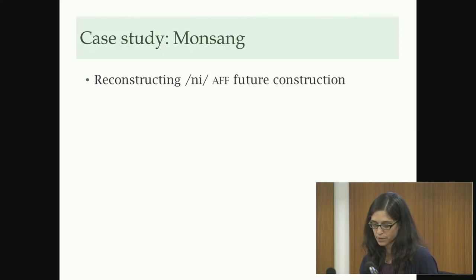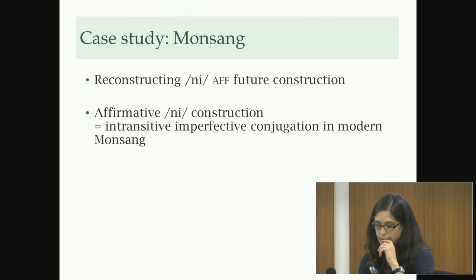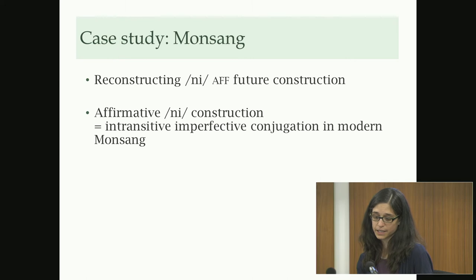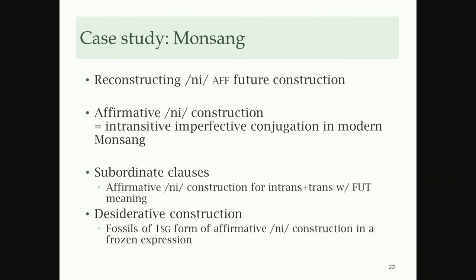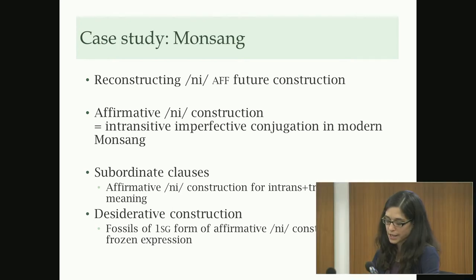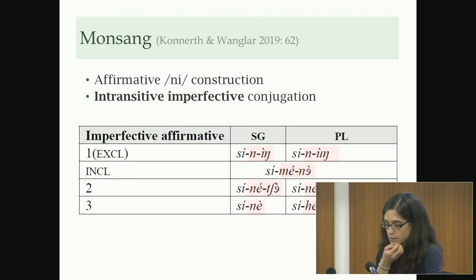In Monsang, I showed the knee construction for negative future, but there's also a knee construction in an affirmative context — in the imperfective intransitive conjugation — which provides evidence that this used to be a construction used in affirmative contexts as well. There's also evidence from subordinate clauses and from a desiderative construction in the language.